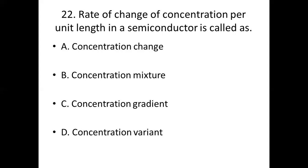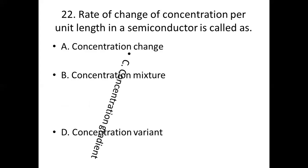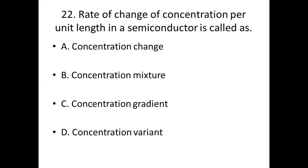Twenty-second one. Rate of change of concentration per unit length in a semiconductor is called as dash. Option A: concentration change. Option B: concentration mixture. Option C: concentration gradient. Option D: concentration variant. Answer: Option C, concentration gradient.